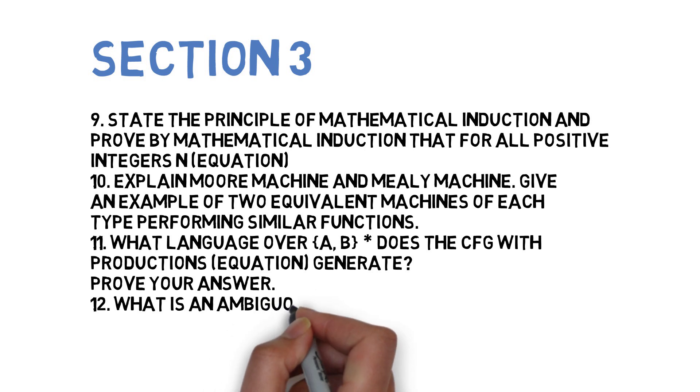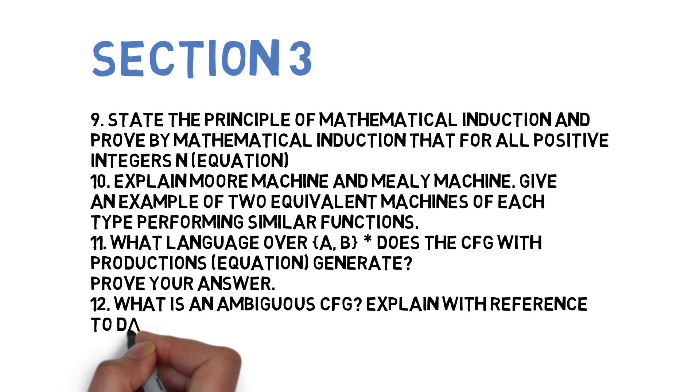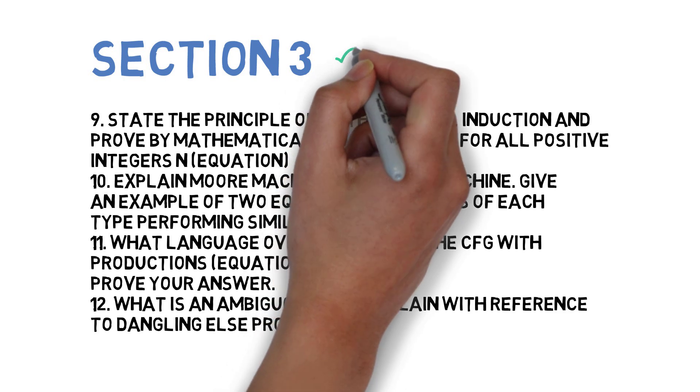Next is what is an ambiguous CFG? Explain with reference to the dangling else problem. These are the questions for Section 3. Let's go to Section 4, where the first is explain union rule and concatenation rule for context-free grammar.